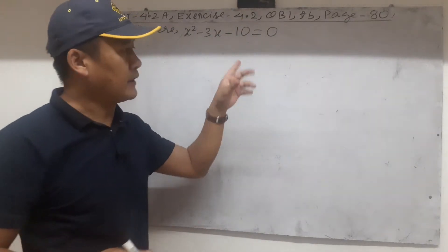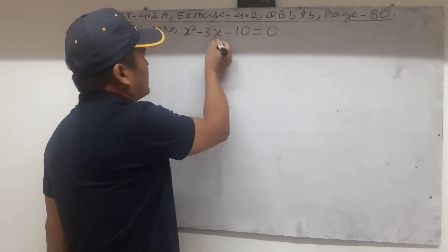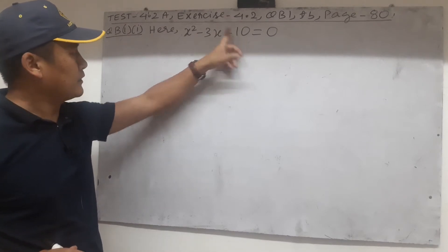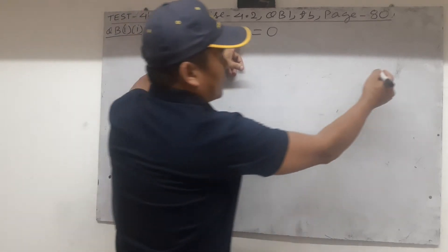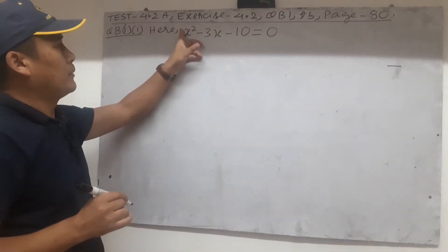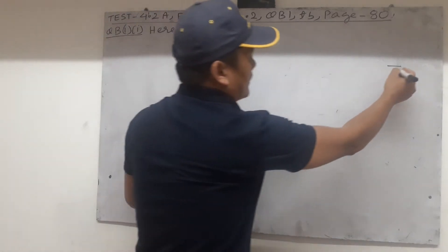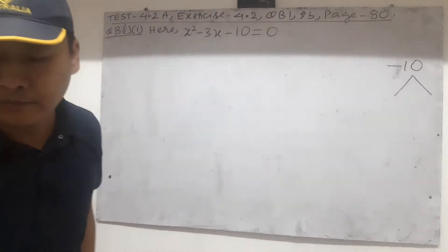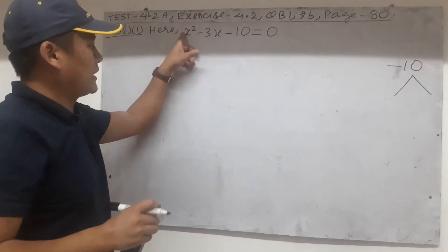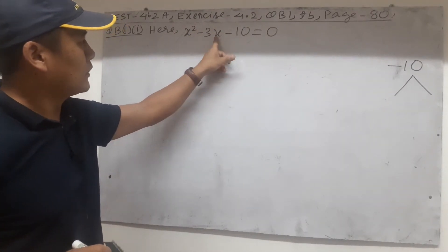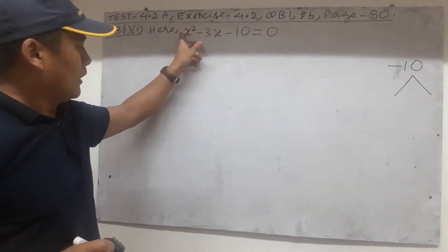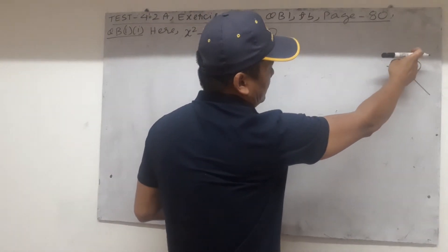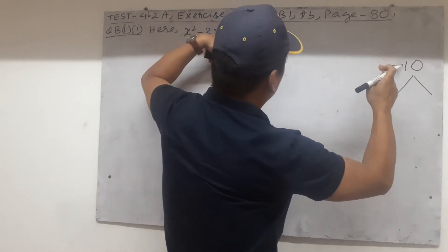Then the second thing for factorization: there are three terms here on the left side, so multiply the first and the third term, including the sign — plus into minus gives minus. Then multiply the number as well as the sign. Then you're going to split the middle term, and write the middle term at the top of the product of the first and third term, which is minus 10.